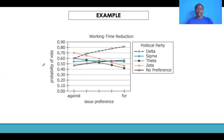So let's look at a practical example. This is an example of how graphics interpretation is tested in the GMAT exam. In our graph, we have a number of details. First of all, we have our y-axis, which includes information about probability of a vote. Always make sure you understand the title of the graph — our graph is a working time reduction graph. The y-axis is about probability of a vote.